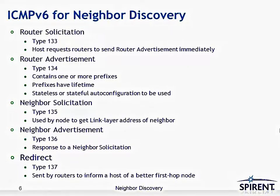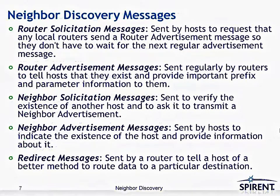A Neighbor Advertisement message is type 136, used in response to a Neighbor Solicitation message. Finally, a Redirect message, type 137, is sent by routers to inform a host of a better next-hop node. These message types — Router Solicitation, Router Advertisement, Neighbor Solicitation, Neighbor Advertisement, and Redirect — are sent for different reasons that will be covered in the following slides.